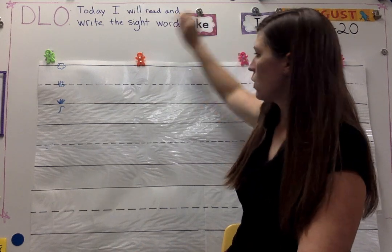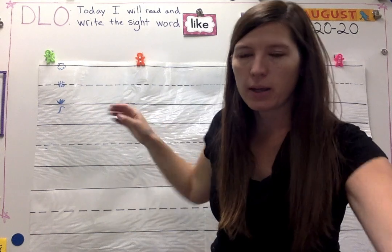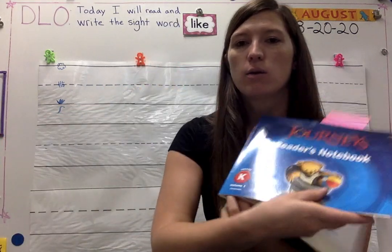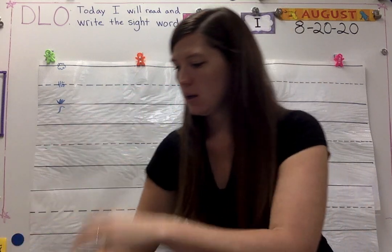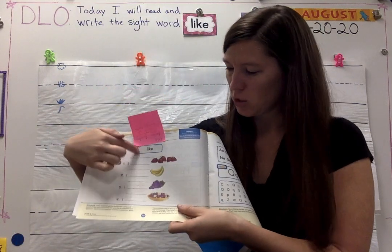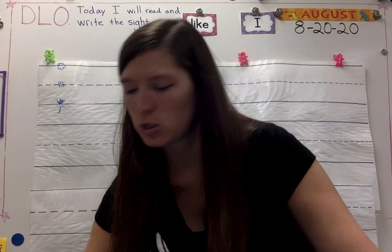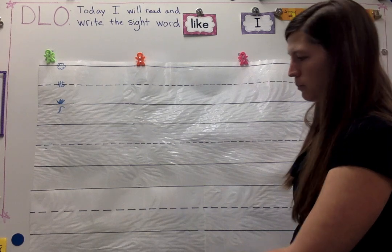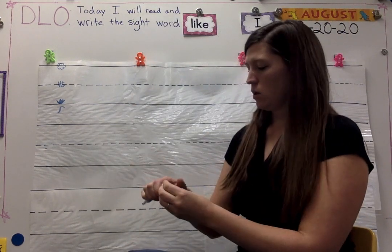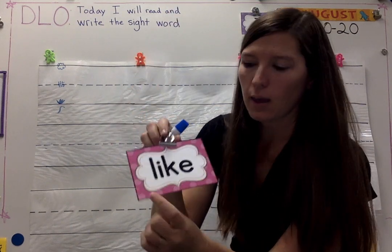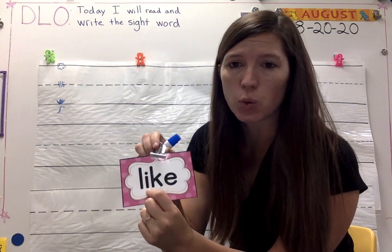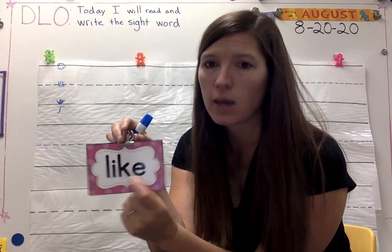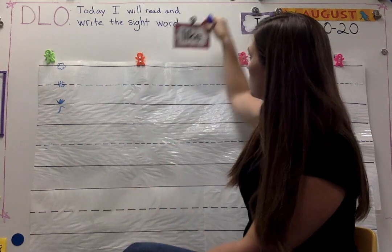I'll put 'like' right here. We're going to practice writing it — I'll show you how to write it. You will have a chance to write it in your Journeys notebook today on page 10. I would do the Journeys page first so that you could practice writing it there with a pencil, and then we'll do our sight word page. I'll use blue again — blue's a good one. When I write 'like,' L is tall: it touches the sky and the ground. I is short. K is tall. E is short. We haven't learned all these letters yet, but that's okay — that's why we're practicing now.